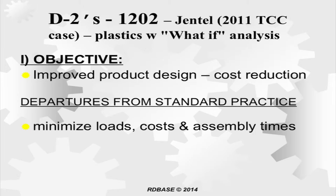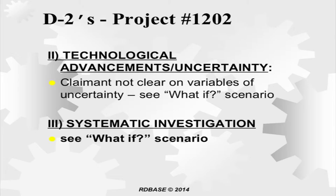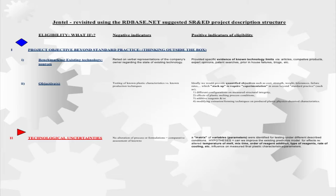Gentel is a case where the company lost — a recent one, probably in the last three years. They made furniture products — shelves, tables — and wanted to minimize loads, costs, and assembly times. If you read the description they submitted, you can see why they lost: they really didn't provide enough detail to show experimental development or that it was scientific in any way. Sadly, the negative indicators column is more or less what they provided.